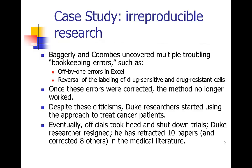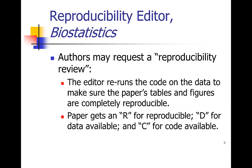But it took Baggerly and Coombs about 1,500 hours to do this sleuthing. Clearly this is not going to occur in most cases — these kinds of errors are going to go undetected unless we have research that is at least checkable. That's why it's so important to be able to check the research and verify that there are no errors in the data and the analysis.